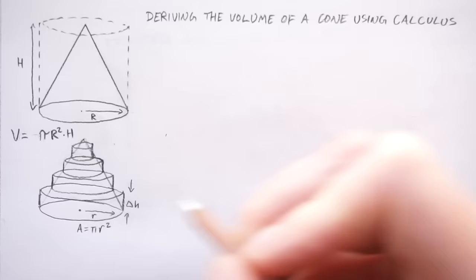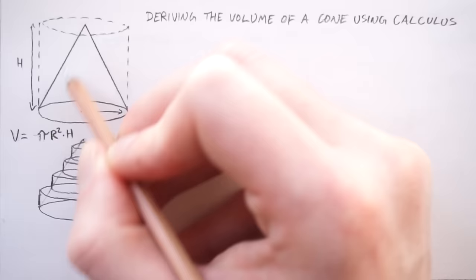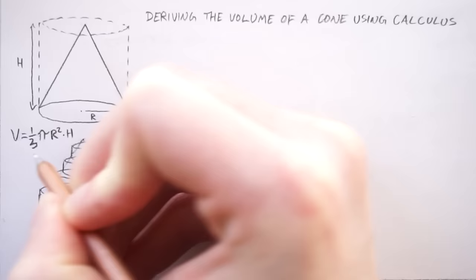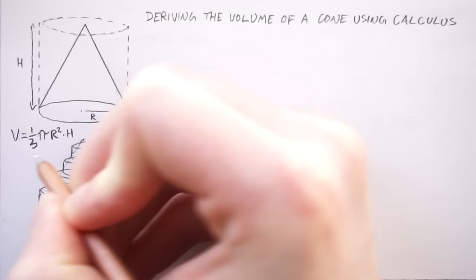So we know that the volume of this cone is going to be smaller than the volume of the cylinder because it's inside it. And it's going to be smaller by some factor. And the actual volume of a cone I'm going to give you now is a third pi R squared H.